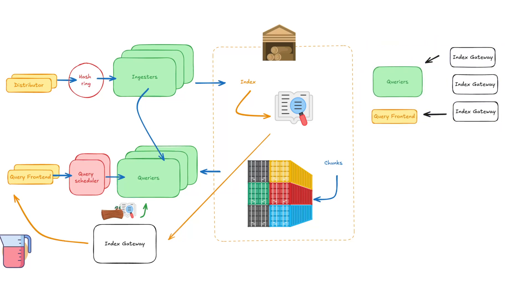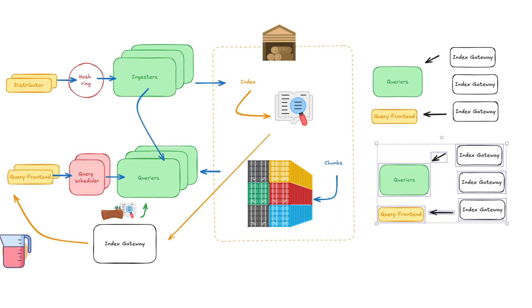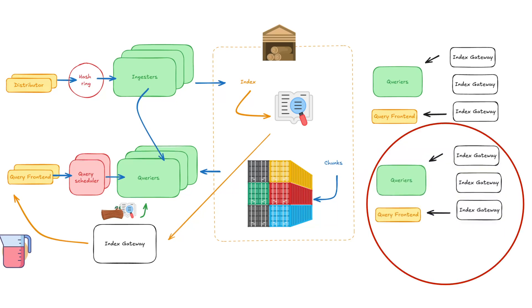Index gateways can run in two modes: simple, meaning all index gateways are available for all tenants, and ring, which uses a similar mechanism to the ingester's hash ring.